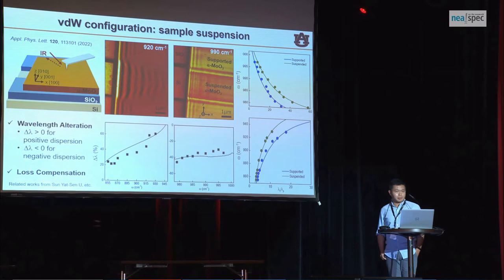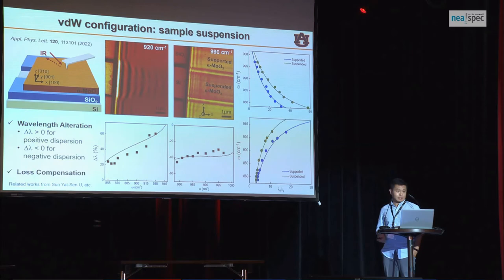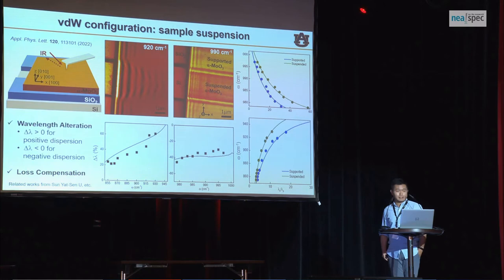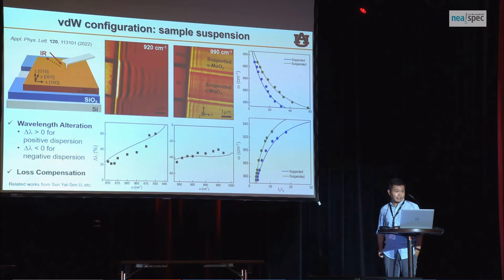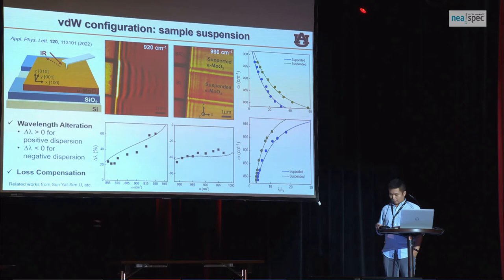In terms of stacking, we can also configure 2D materials by controlling the substrate and superstrate, since you can easily stack them into different structures. For suspended MoO3 samples, the wavelengths get elongated by a factor of almost two compared to the original wavelengths, corresponding to positive dispersion. Going to higher frequencies where the permittivity switches sign in the in-plane directions, you get negative dispersion, which shrinks the wavelength. Removing the substrate also reduces substrate losses.